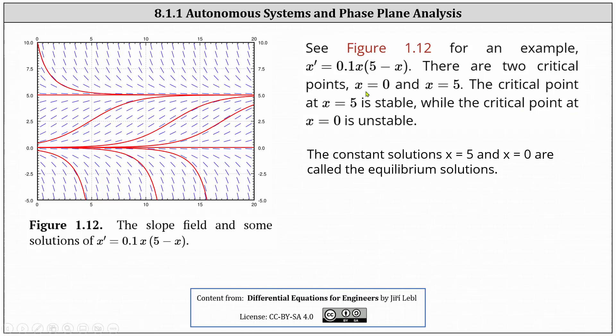The critical point at x = 5 is considered stable because if there's a small change in the initial condition as t approaches infinity, the function still converges to x = 5. However, if there's a small change in the initial condition around x = 0 as t approaches infinity, the solution no longer approaches x = 0. The constant solutions x = 5 and x = 0 are called the equilibrium solutions.